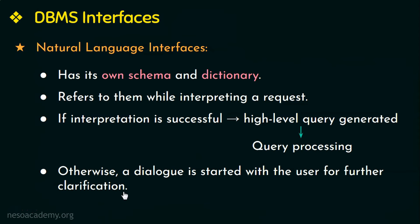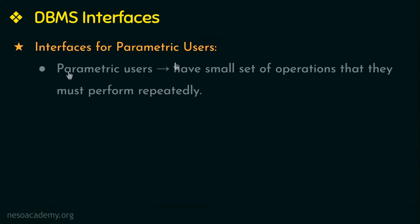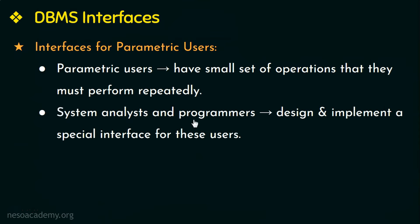Next are the interfaces for parametric users. Parametric users or naive users — like reservation agents and bank tellers — have a small set of operations they must perform repeatedly on a daily basis. For these users, system analysts and programmers design and implement a special interface, which may include abbreviated commands to minimize the number of keystrokes required for each request.